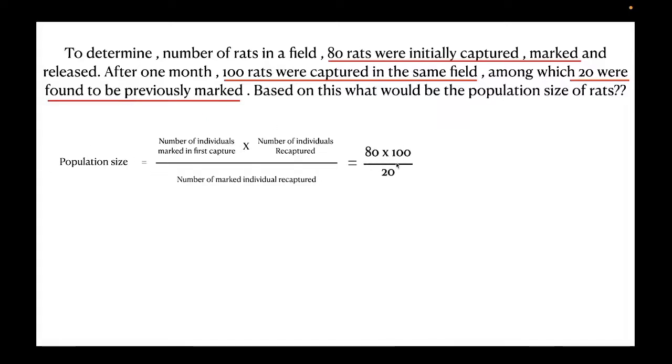So according to the formula, we get 80 into 100 by 20. So the resultant would be 400. Now 400 is the estimated population size of the rats in the total field.